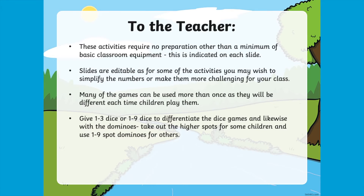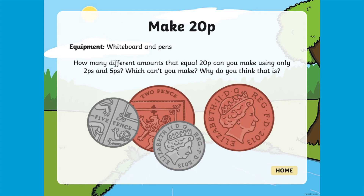On the next page you'll find the select an activity page. On here you'll have access to every question that's on the PowerPoint. All you need to do is click on the one that you'd like to open and it'll take you through to the activity for your children to do.